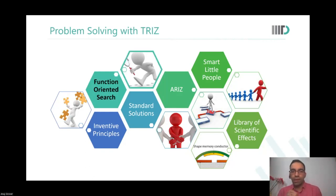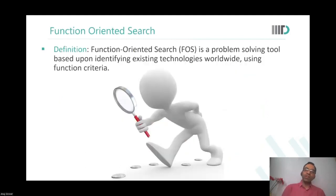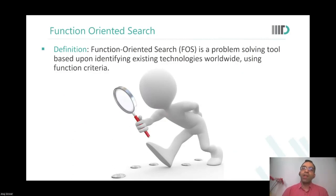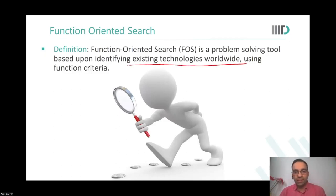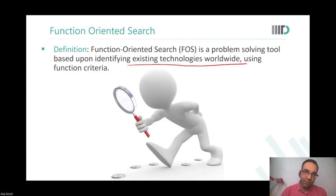Today we will start to look at function-oriented search. Function-oriented search is essentially a problem-solving tool based on identifying existing technologies worldwide using function criteria. Until you have made a function model of your product, how would you do function-oriented search?